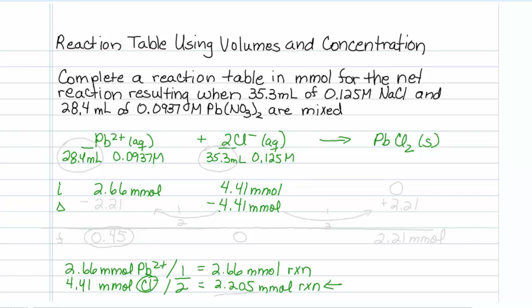so the amount of lead 2 plus that we consume must be 1 half, or 1 over 2, the amount of chloride that we consume. So I will put minus 2.21 here, and the same goes over here. It is 1 divided by 2, or plus 2.21.